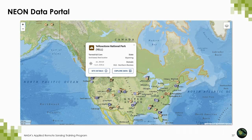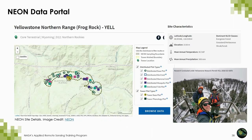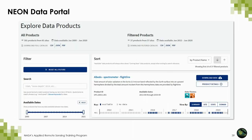You can also search for data by a specific site. On the map you can see the site locations. Here I've clicked on one of the core sites at Yellowstone National Park, and you can see some initial details and then explore the data directly. If you click on site details, you'll be taken to a page with data related to mosquitoes and various gridded data. Then if you click on browse data, you'll be taken to the explore data products page for that specific site. Along the left panel is where you can modify your selections, and you would see that the Yellowstone site is selected as the filter.